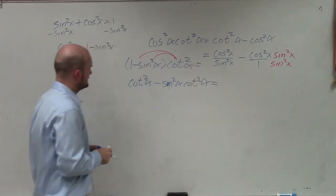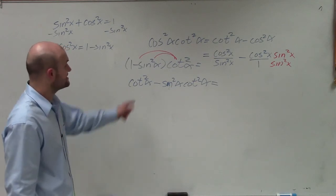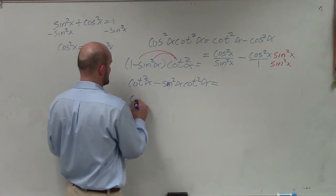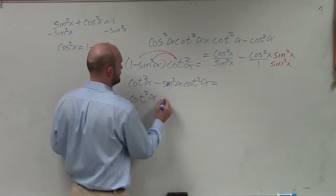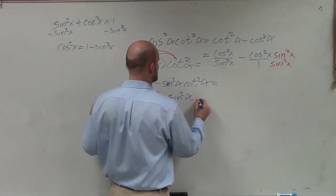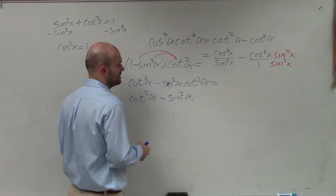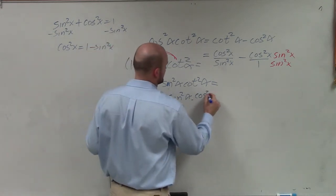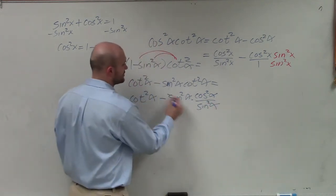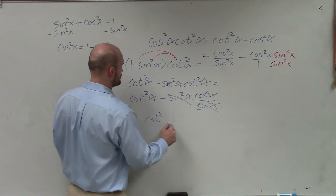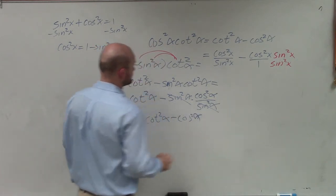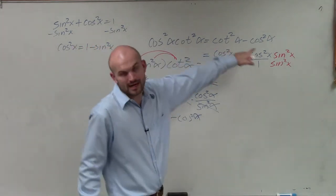So all right, well, that's nice. And then you guys can see here, if I rewrite cotangent squared of alpha in terms of sines and cosines, I have cotangent squared of alpha minus sine squared of alpha times cotangent, which is going to be cosine squared of alpha divided by sine squared of alpha. Where now you can see my sines divide out, so I'm left with cotangent squared of alpha minus cosine squared of alpha, which is exactly what I'm looking to get over there.